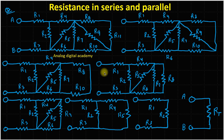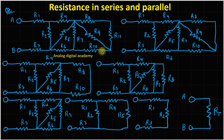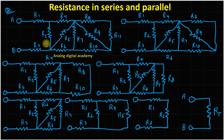Hello friends, welcome to my channel Analog Digital Academy. Today I am going to discuss about the series and parallel combinations of resistance. This is the circuit and we will calculate the equivalent resistance of this circuit, which contains a combination of series and parallel resistances. We have to reduce it to a single equivalent resistance.